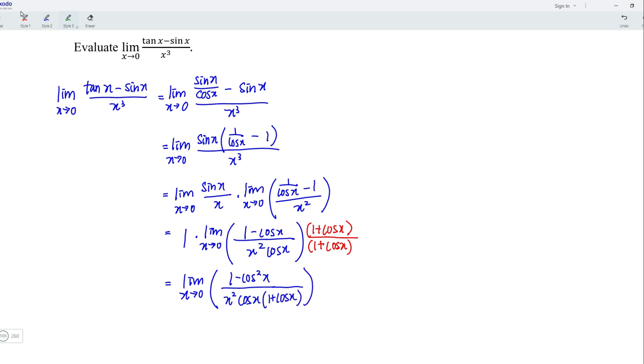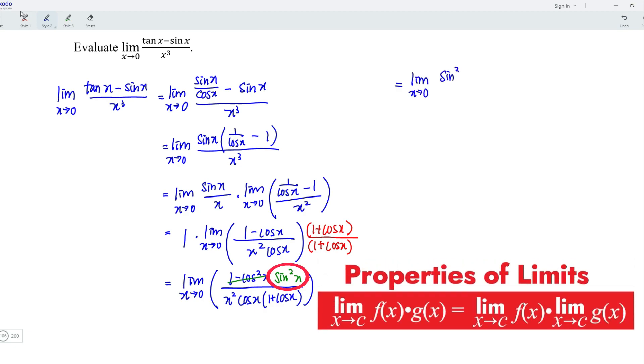Recall that 1 minus cos squared x is simply sine squared x. Next, let's rewrite the limit again by using properties of a limit. We should have sine squared x over x squared multiplied by the limit x approaches 0 for the function 1 over cos x multiplied by 1 plus cos x.